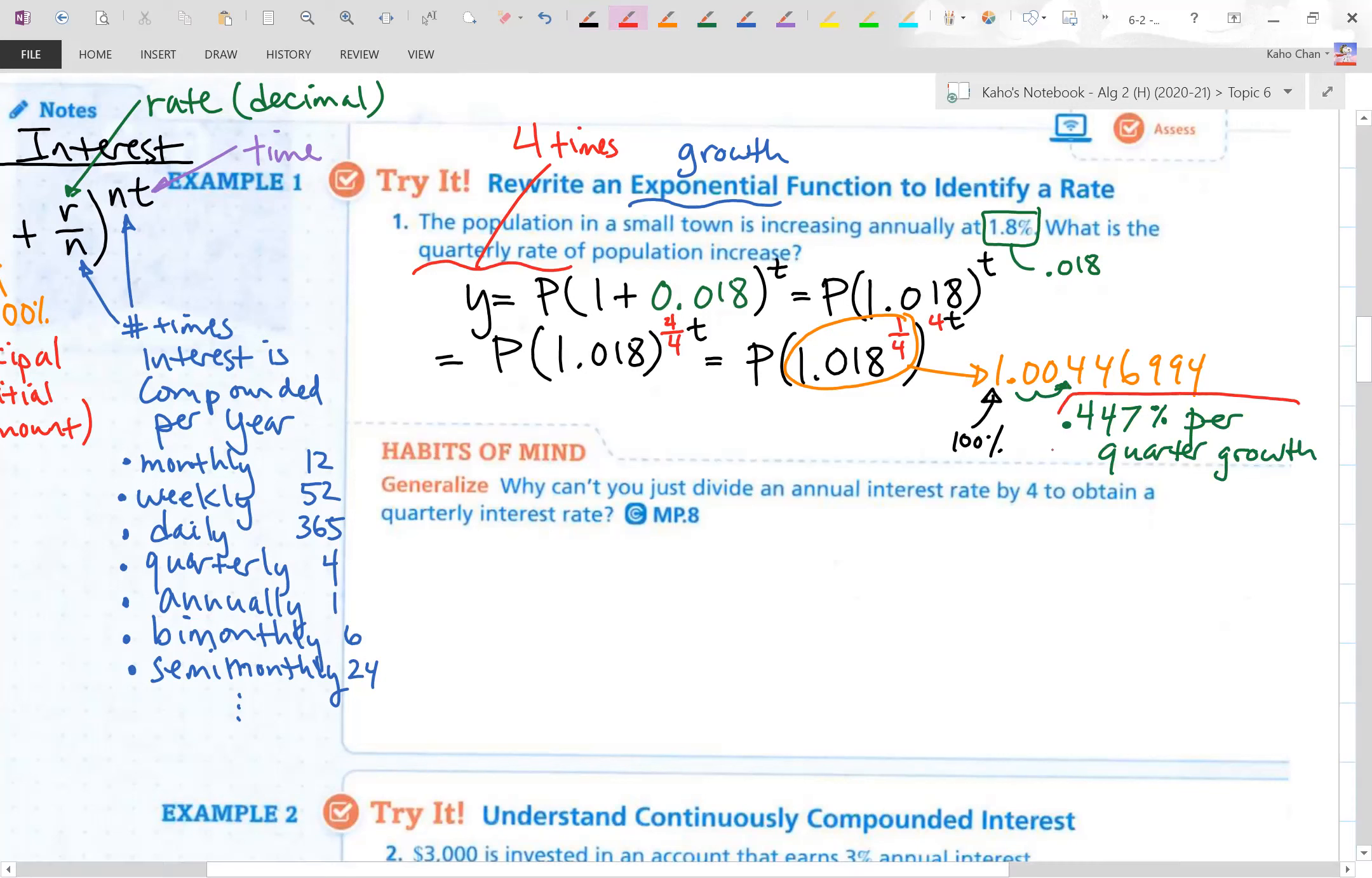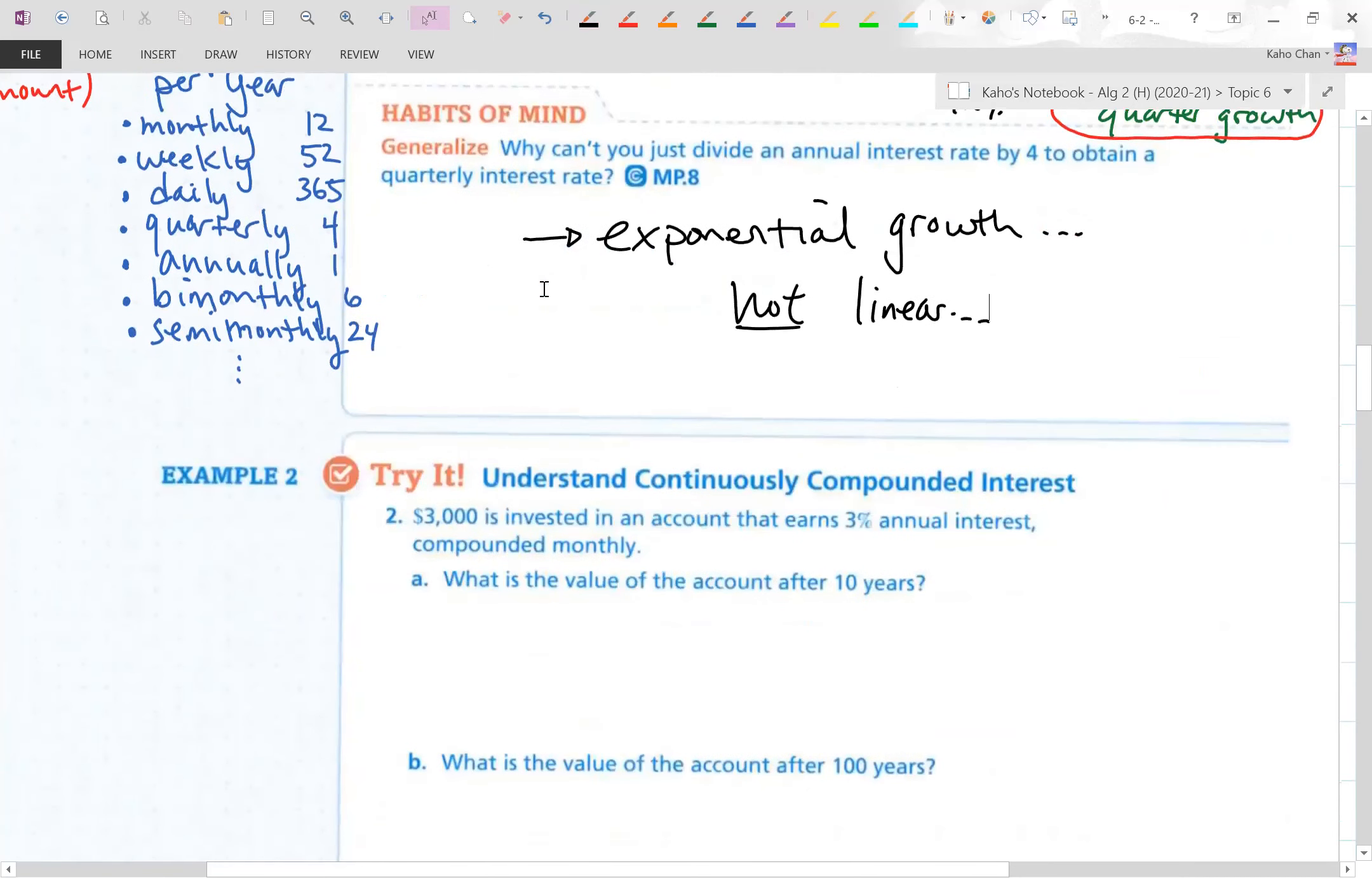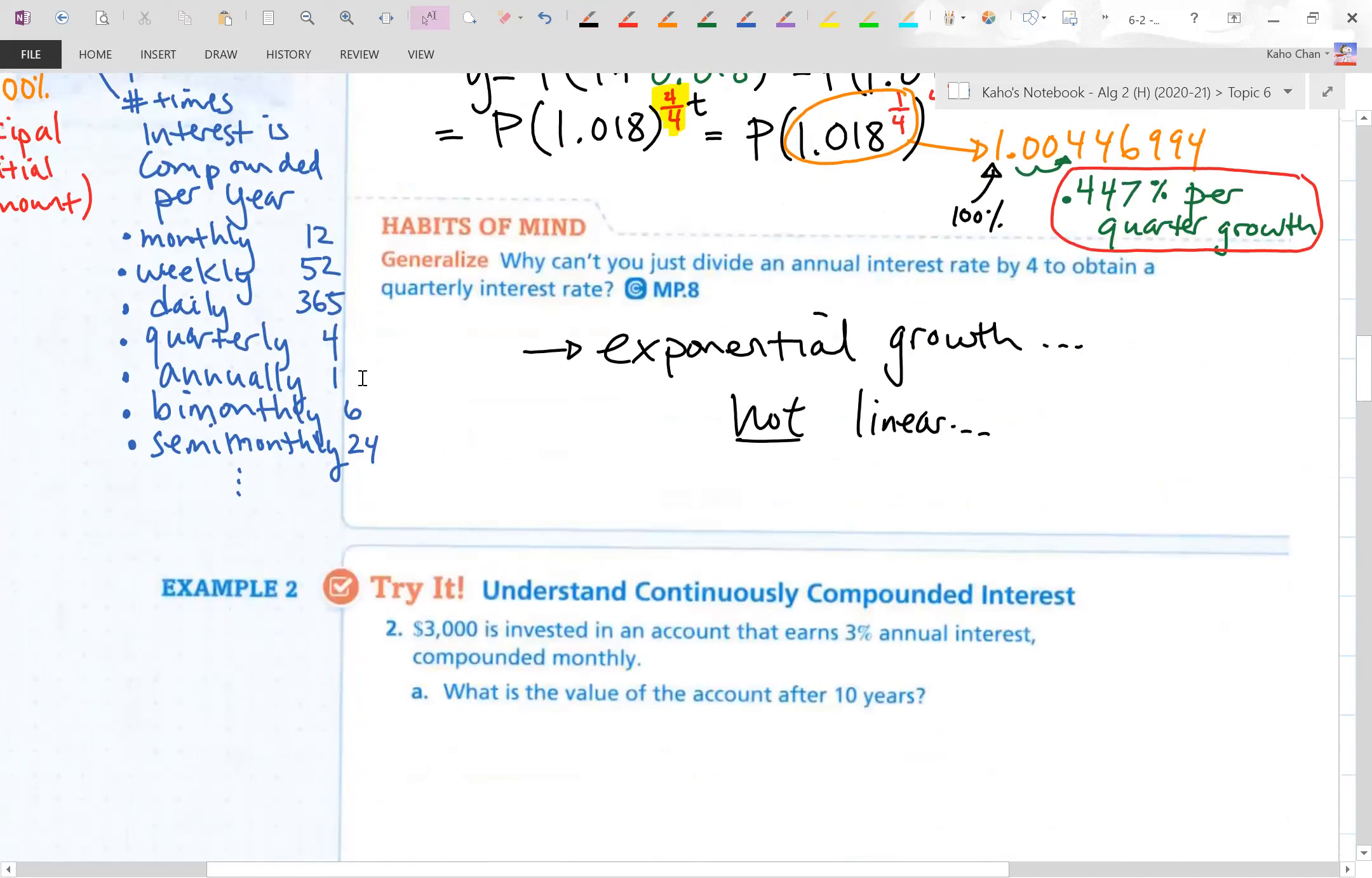Kind of a weird answer, isn't it? But that's what they want. Why can't you just divide an annual interest rate by 4 to obtain a quarterly interest rate? The problem is that this is not linear. This is exponential growth. So, I had to do this weird kind of a fraction there. Otherwise, it would have been easy just to divide by 4. So, the answer is it's an exponential growth. It's not linear. So, that was an interesting way of looking at how we can divide up percentages in a year into whether it's monthly, daily, weekly, quarterly, I don't know anything.